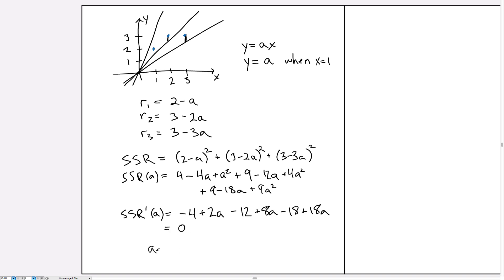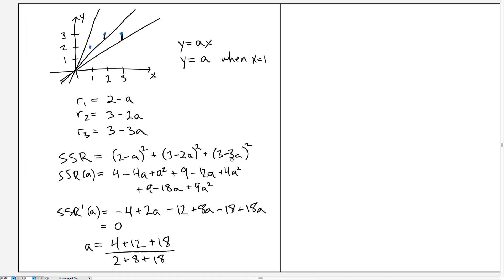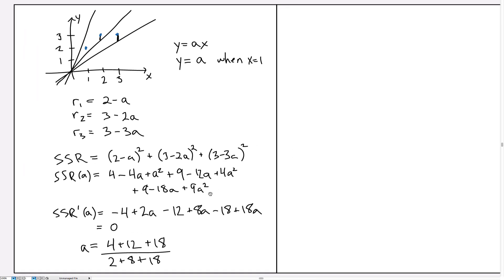And we set this equal to 0. And solving, we get A equal, and I'm going to write it out fully. So this is going to be 4 plus 12 plus 18, and then I'm going to divide by the sum of the coefficients on the A's, 2 plus 8 plus 18. Now the reason I'm doing that is it'll be easier for us to figure out what this general formula would look like when I don't have particular coordinates.